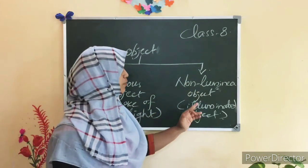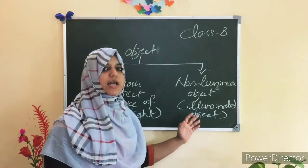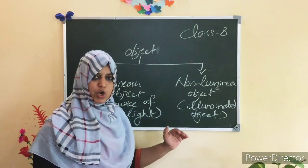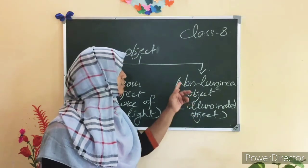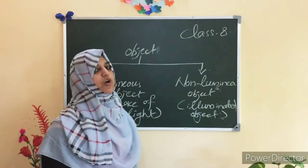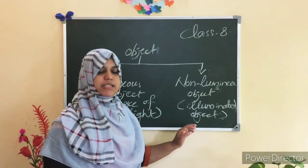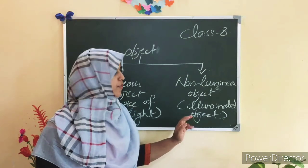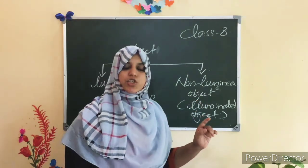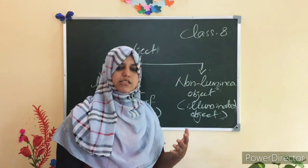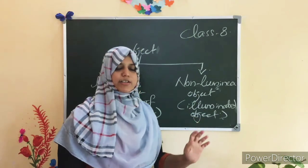Next is non-luminous object, also called illuminated object. The object which does not emit its own light is known as a non-luminous object or illuminated object. A typical example is the moon. Other examples are chair, table, and pencil.